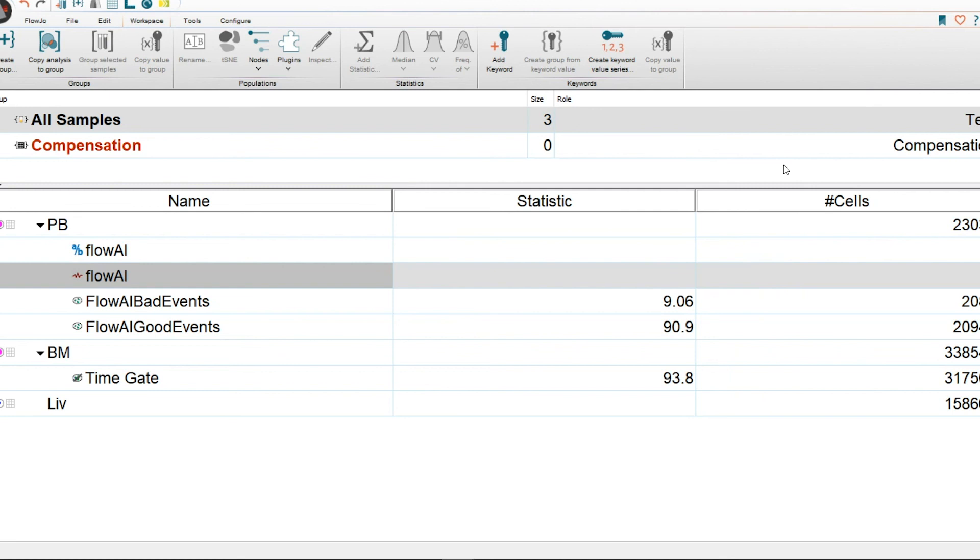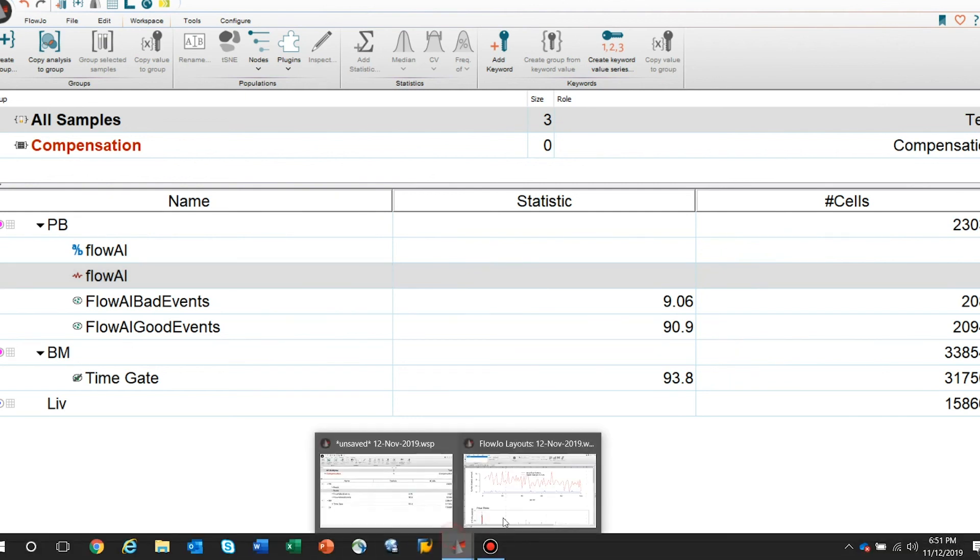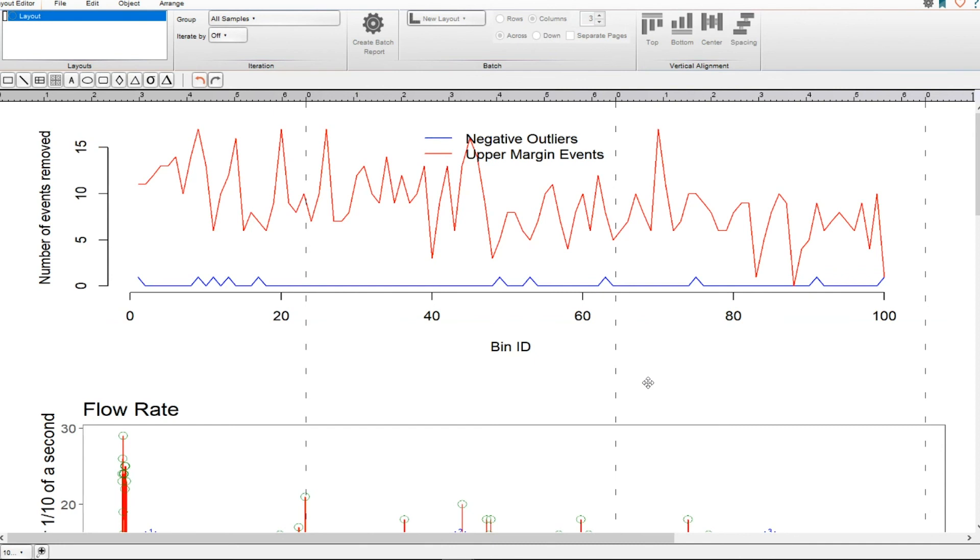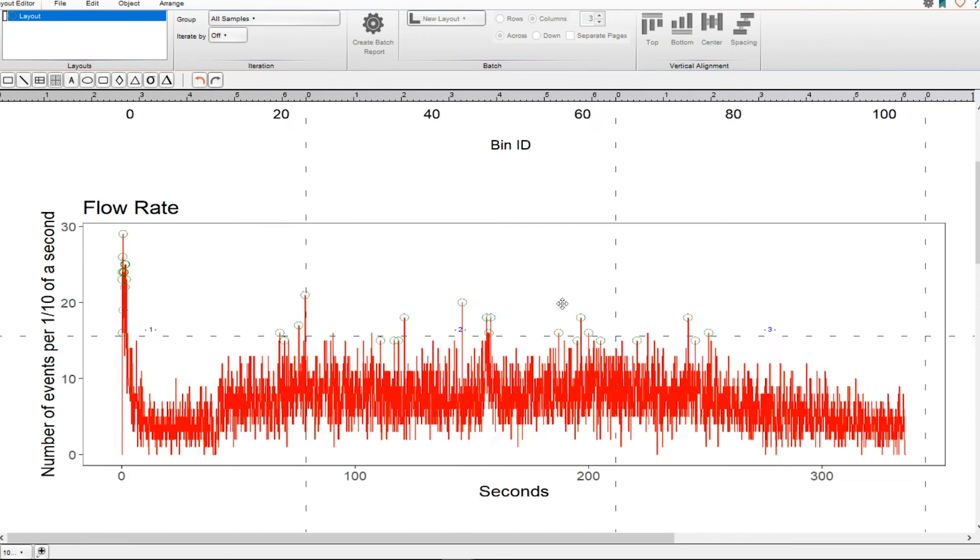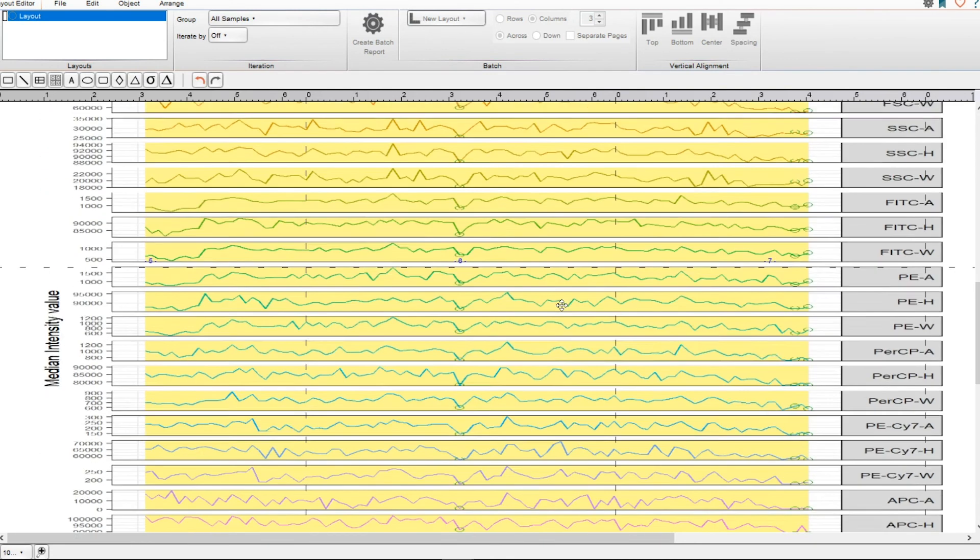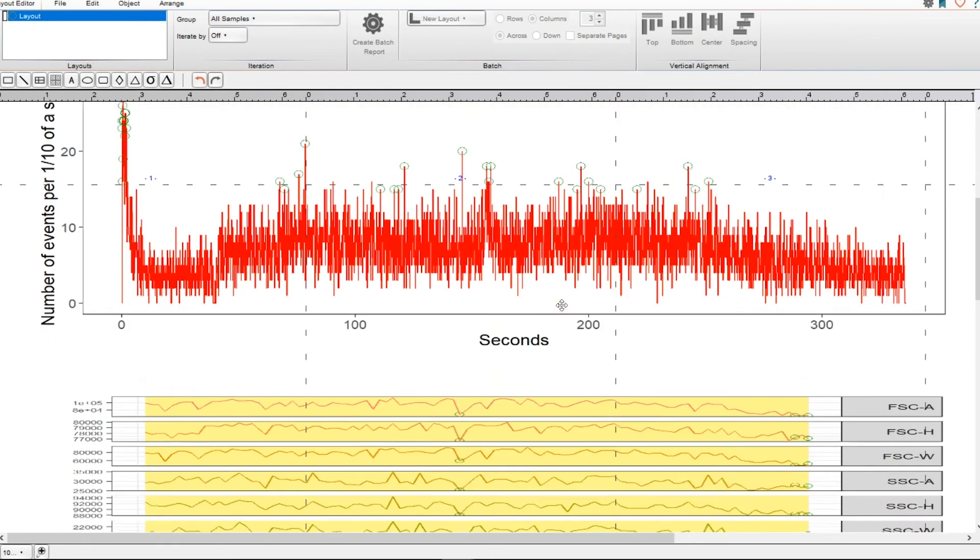What about if you wanted to go ahead and check why were these flagged? So you would click highlight and select the FlowAI node, and then you would drag and drop it onto your layout editor. So what you then would do is this will give you these visualizations as to how the number of events that will remove the bins and the flow rate and all the other information that I previously described.